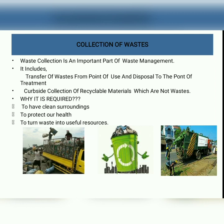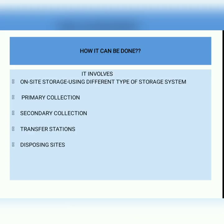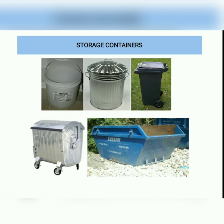It is important to have proper collection because only then we can have clean surroundings, better health, and it will also help to return waste to useful resources. Different methods can be employed: house-to-house collection, community bins, curbside pickup, and self-delivery. The choice of method is dependent on the situation and location, and the whole collection and transportation system is a chain of linked stages involving on-site storage, primary collection, secondary collection, transfer stations, and disposing site.